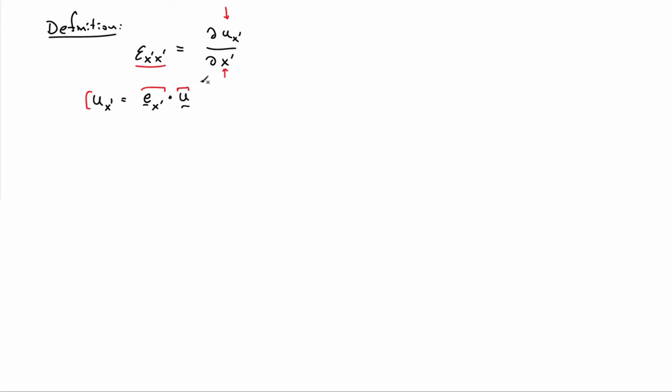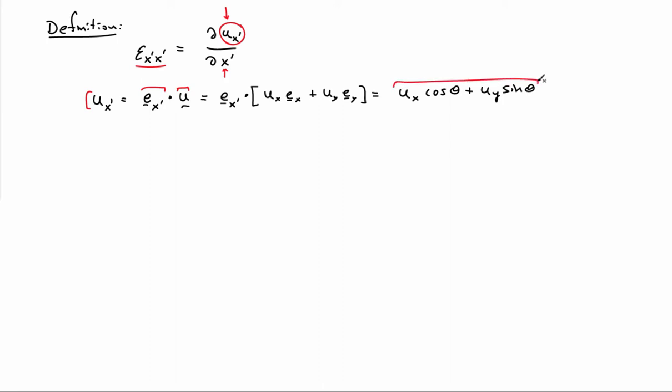I'm going to represent u in terms of u_x and u_y by expanding the displacement vector in terms of the x and y displacements. Taking the dot products, I end up with u_x cosine theta plus u_y sine theta. That converts the numerator into something in terms of the x and y coordinate frame and the angle theta between the two coordinate frames.